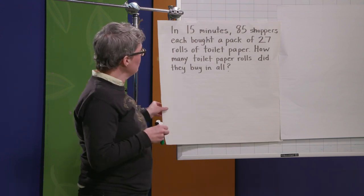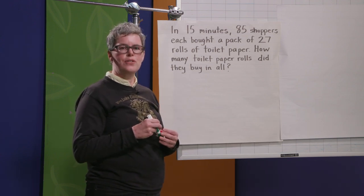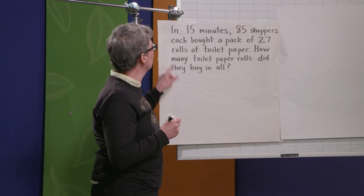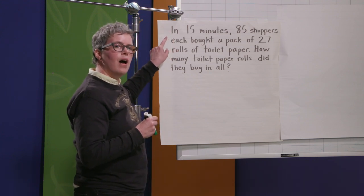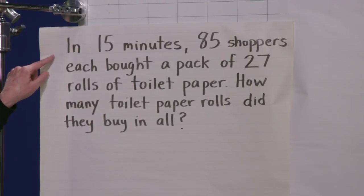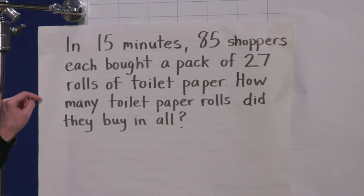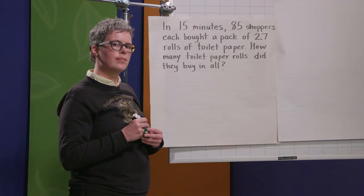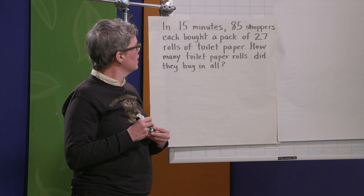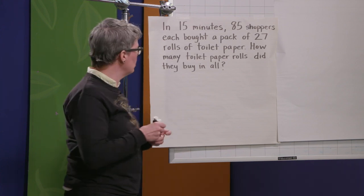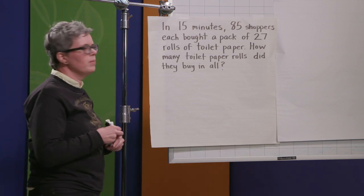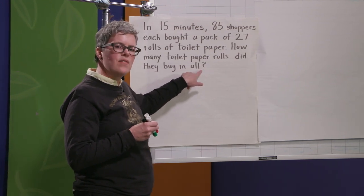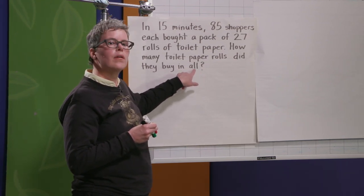Alright, let's get into the next read. Second read. Second read is, what is this problem asking you to figure out? What do we need to do? What is the question? Okay, listen again. And this time I want you to read along. In 15 minutes, 85 shoppers each bought a pack of 27 rolls of toilet paper. How many toilet paper rolls did they buy in all? Okay, we're trying to figure out the total number of toilet paper rolls. How many toilet paper rolls were bought in all? And these words 'in all' sometimes can really be a tip-off that there's a total involved, that you're trying to find a total.